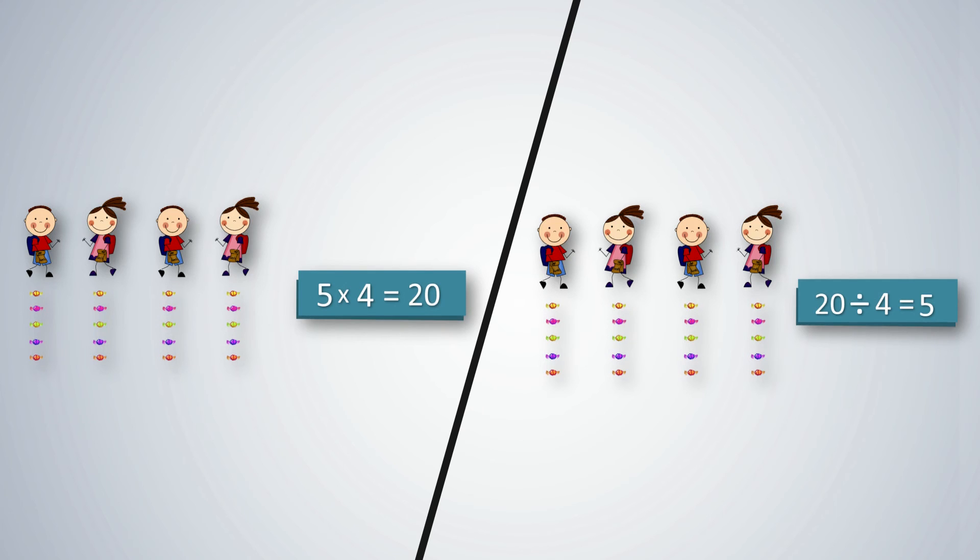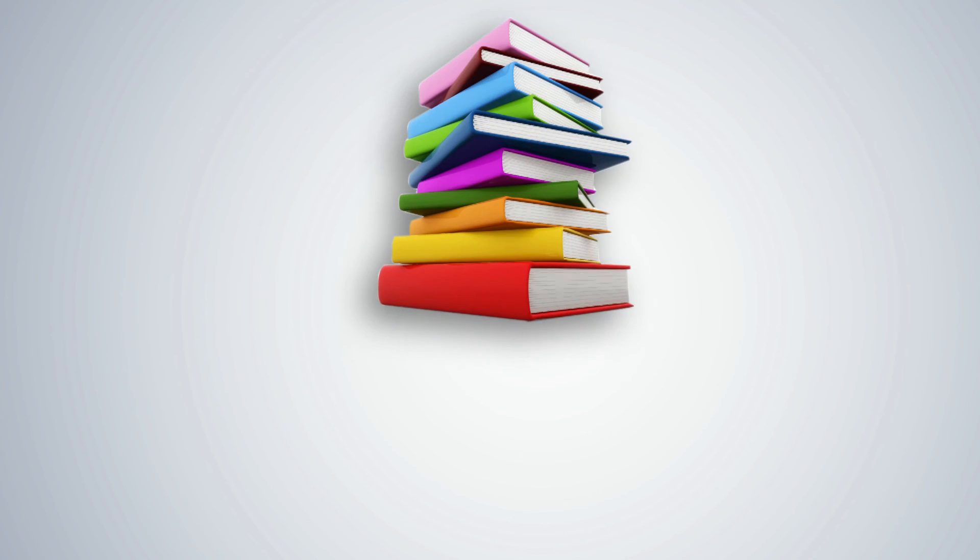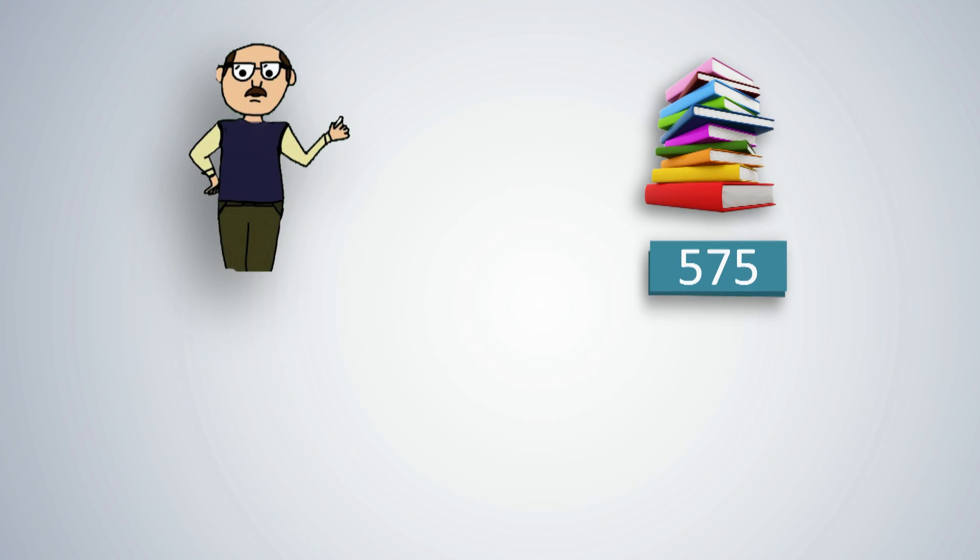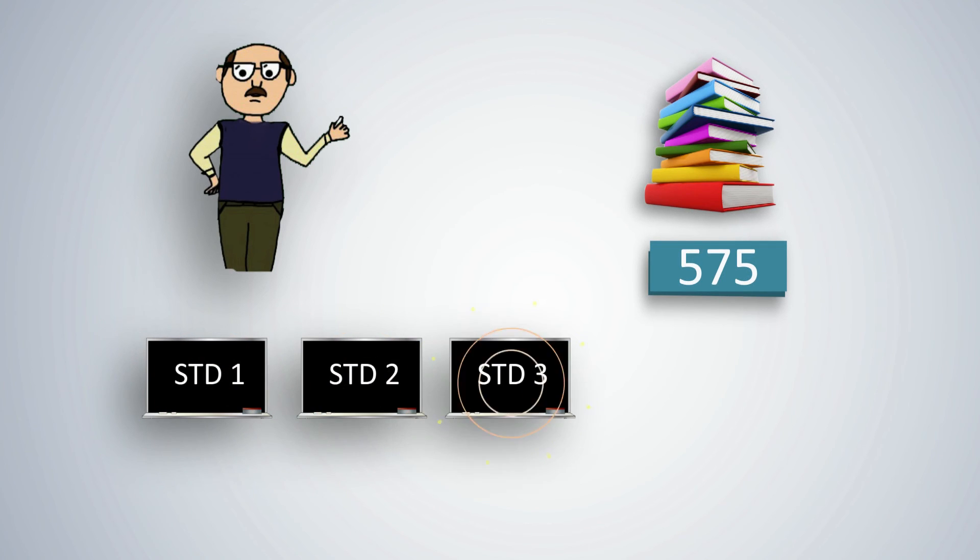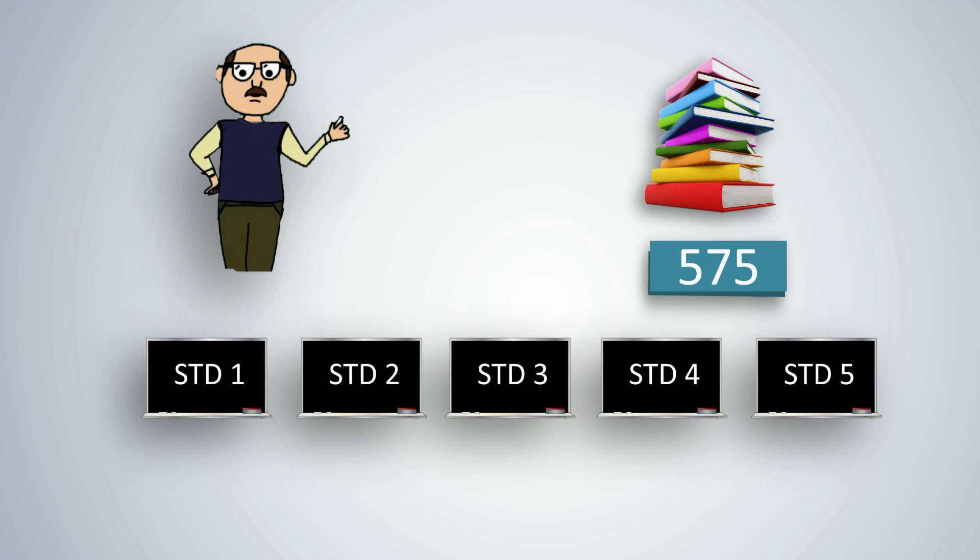Let students see that division is the reverse of multiplication. Here is another example. A school gets 575 library books. The headmaster wants to distribute them equally to 5 classes. Here, we need to find the quantity of books each class will receive. Thus, the process of division has to be applied.